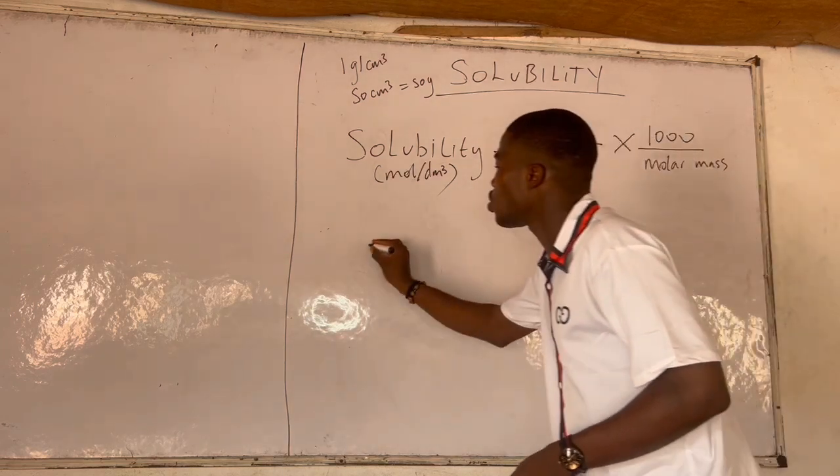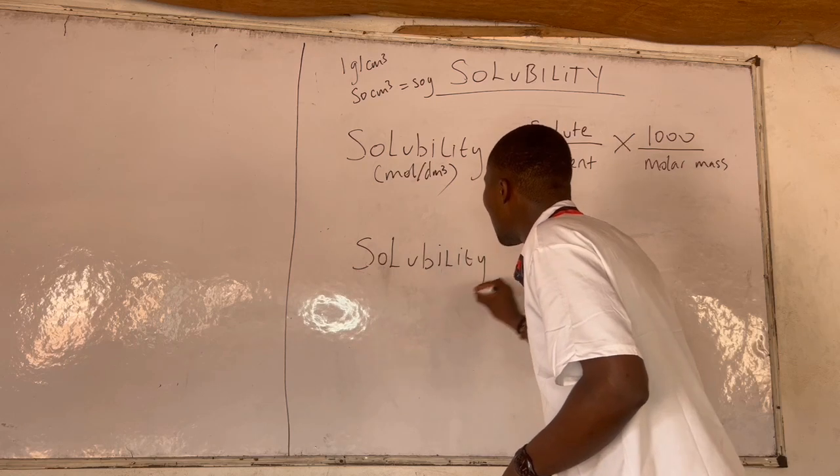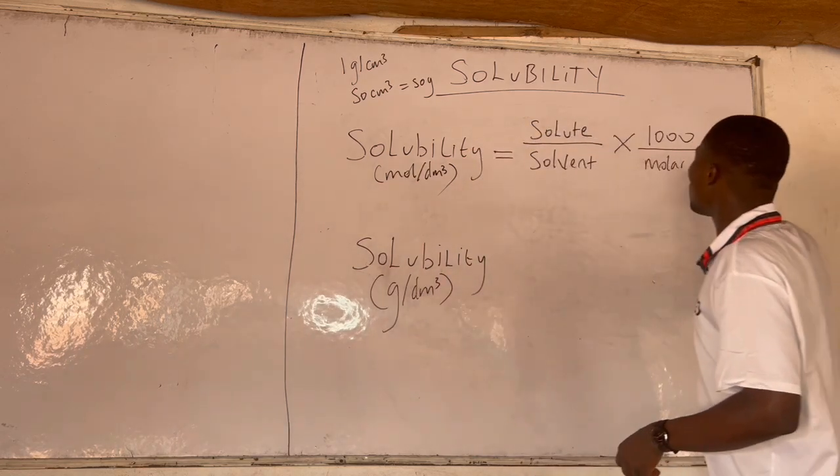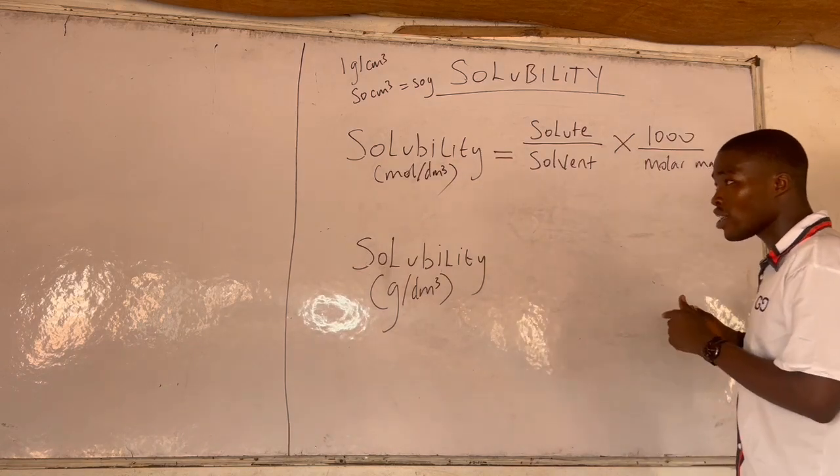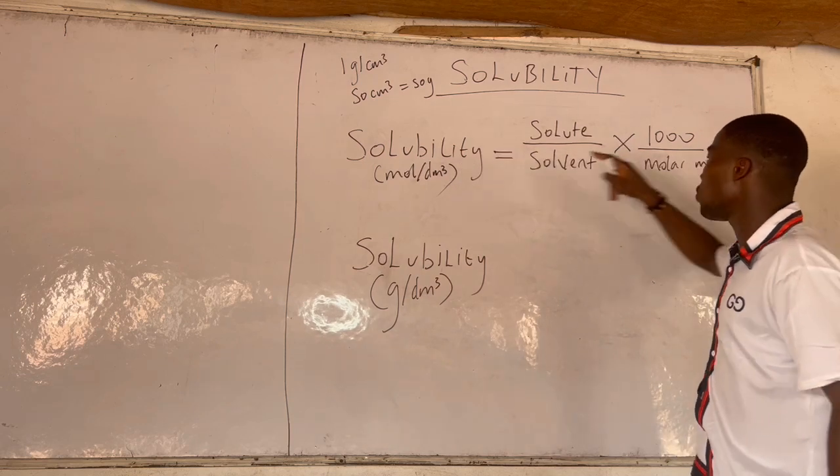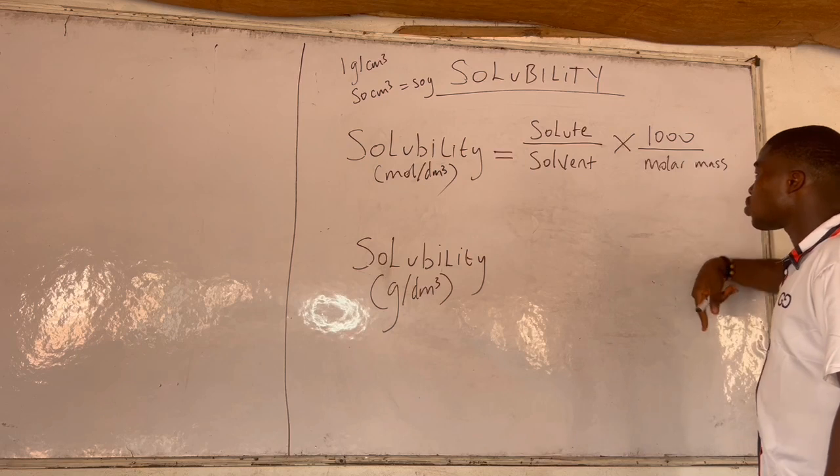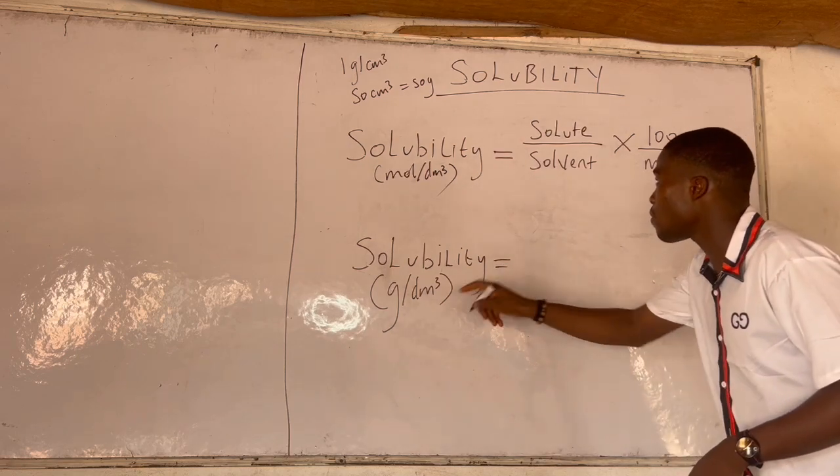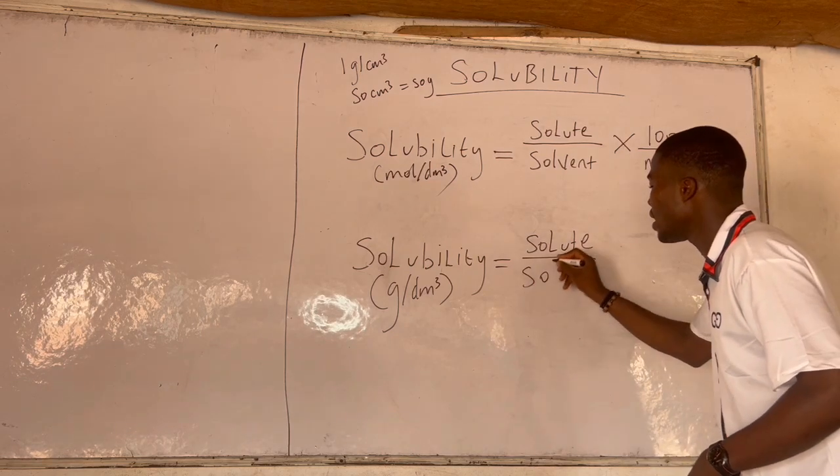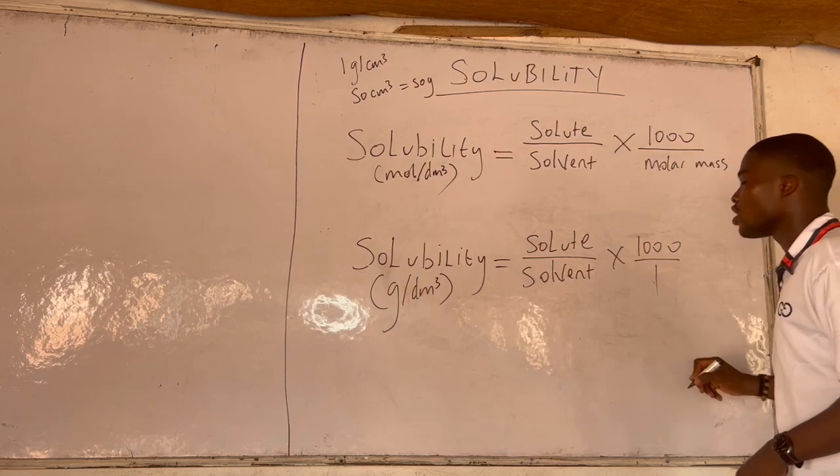What about the same solubility in grams per dm³? I told you, it's to just remove molar mass because gram per dm³ is equal to mole per dm³ times molar mass. If it was existing, molar mass cancels molar mass. So it therefore means that in gram per dm³ we have solutes over solvent times one thousand over one.